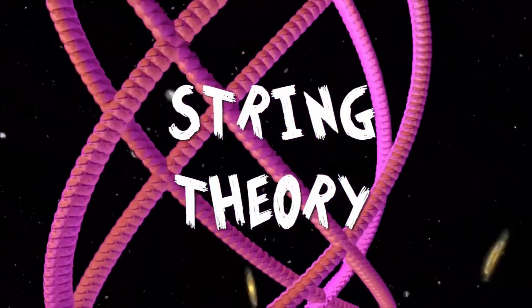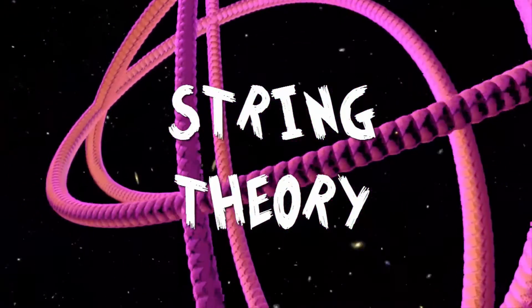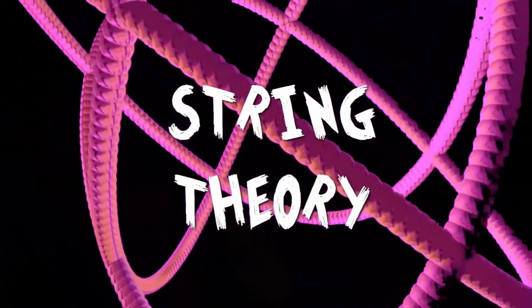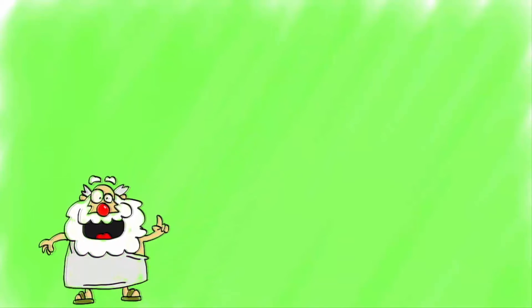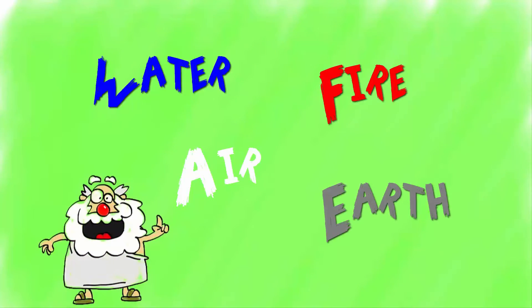To understand the string theory, let's take a quick look at the four forces, which control everything in our universe, which the string theory unites. So, before modern science, the ancient Greeks thought that the universe is made of four elements: air, water, earth and fire.